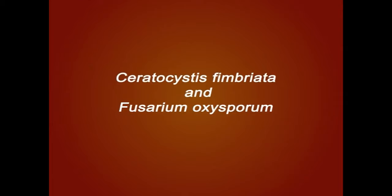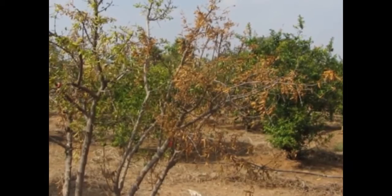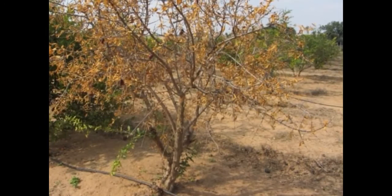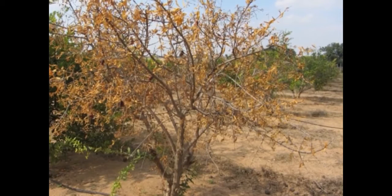Next important disease is wilt of pomegranate, caused by Ceratocystis fimbriata and Fusarium oxysporum. Affected plants show yellowing of leaves in some twigs or branches followed by dropping and drying of leaves. The entire tree dies in a few months or a year. When the affected tree is cut open lengthwise or cross-section, dark grey-brown discoloration of wood is seen.